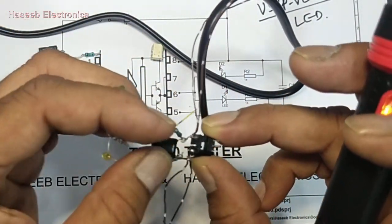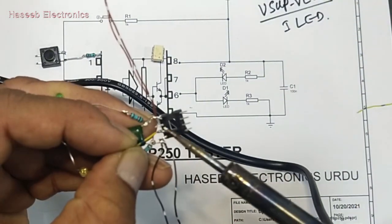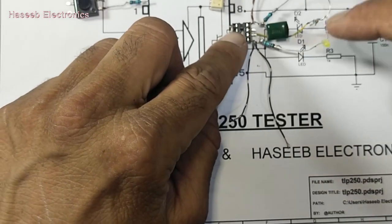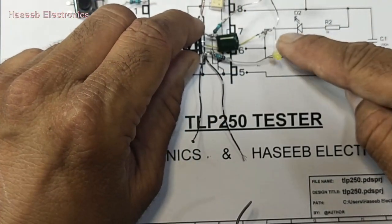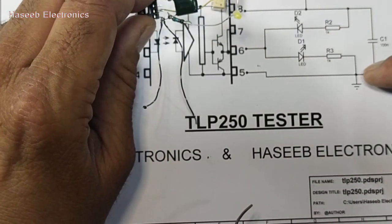In this socket we can install the optocoupler quickly and test it within seconds. I connected capacitor between pin 5 and 8, one LED from pin 6 to pin 8, second LED from pin 6 to pin 5.